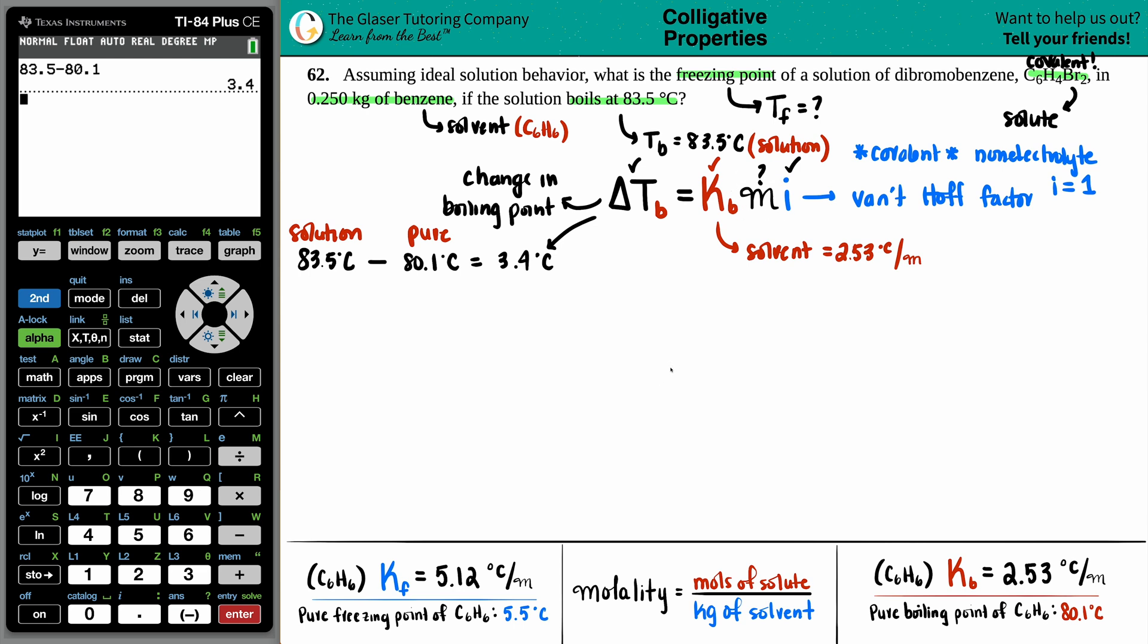So first off, we're going to solve for the molality. Maybe that will help us with finding out the freezing point. So let's try it out. 3.4 equals the KB 2.53 times molality, which is x, times by one. Anything times by one is itself. Divide on both sides by 2.53. 3.4 divided by 2.53, I get x equals 1.344, and this is molality.